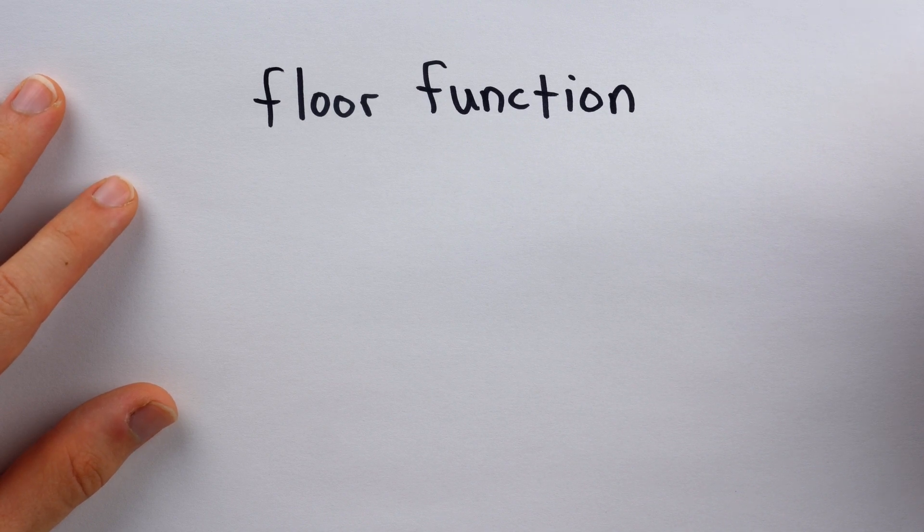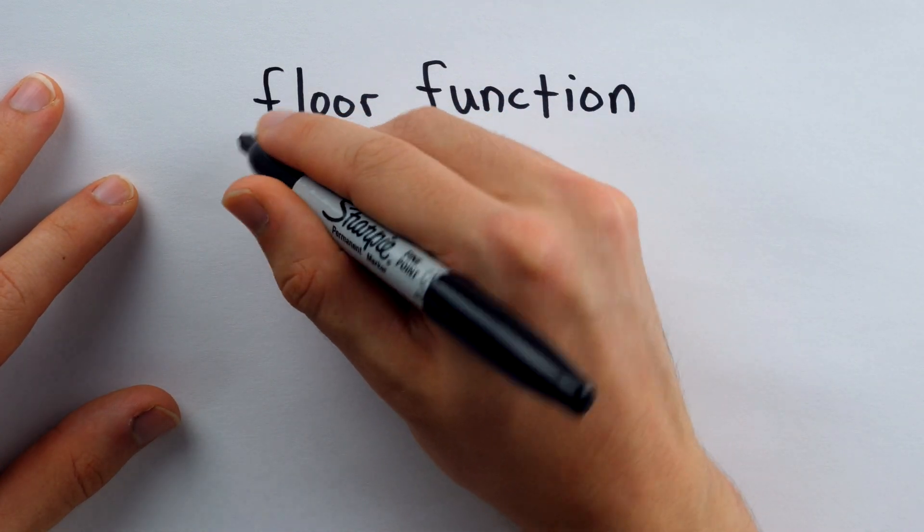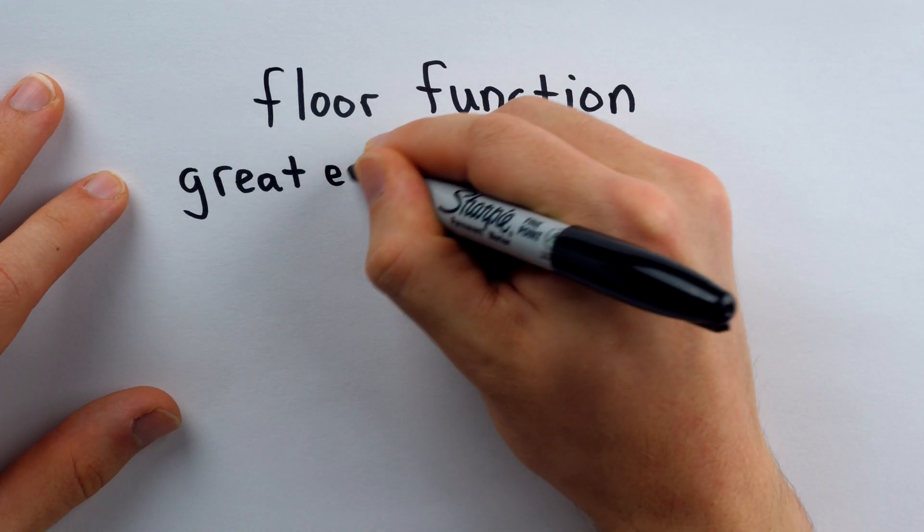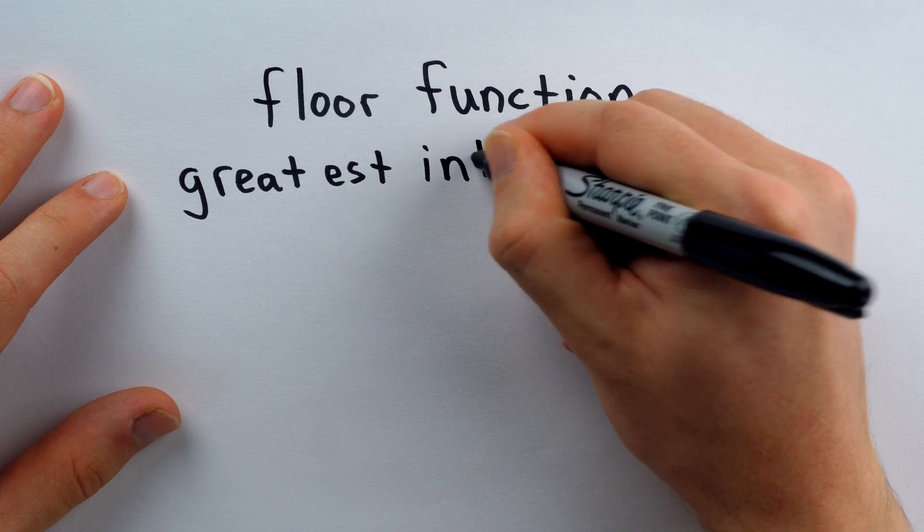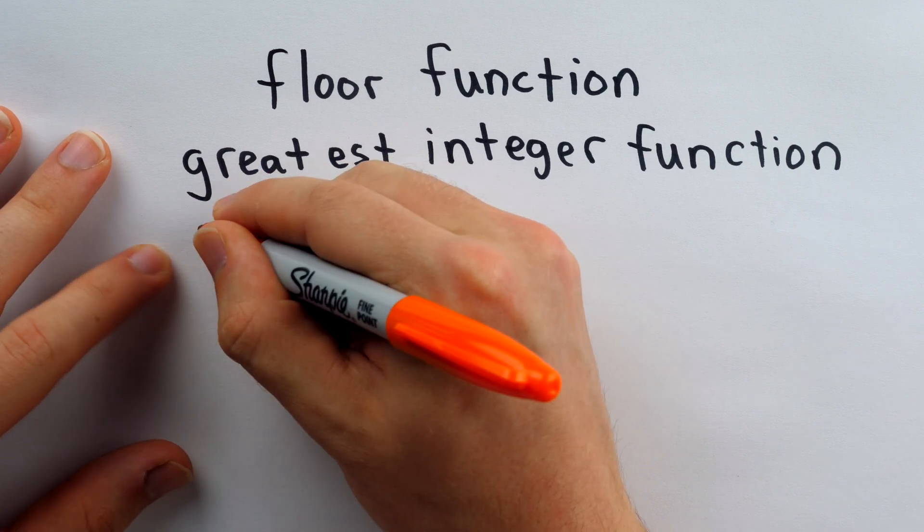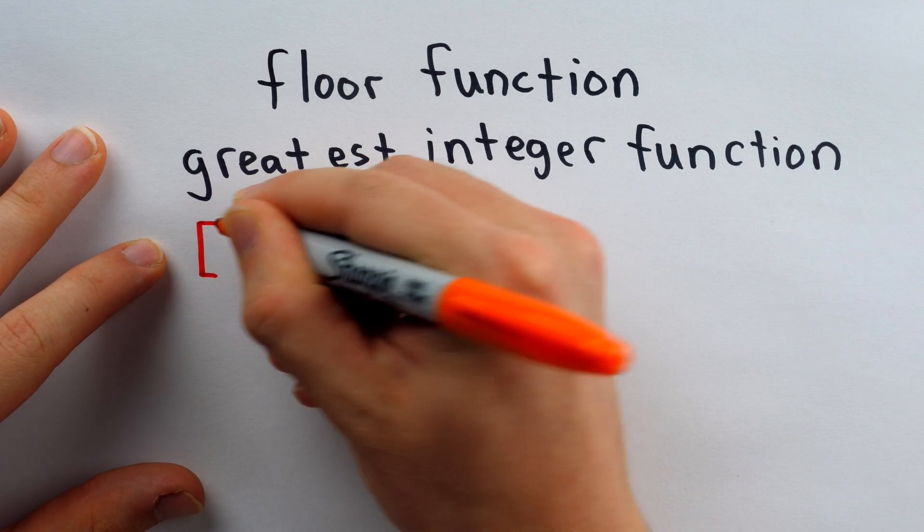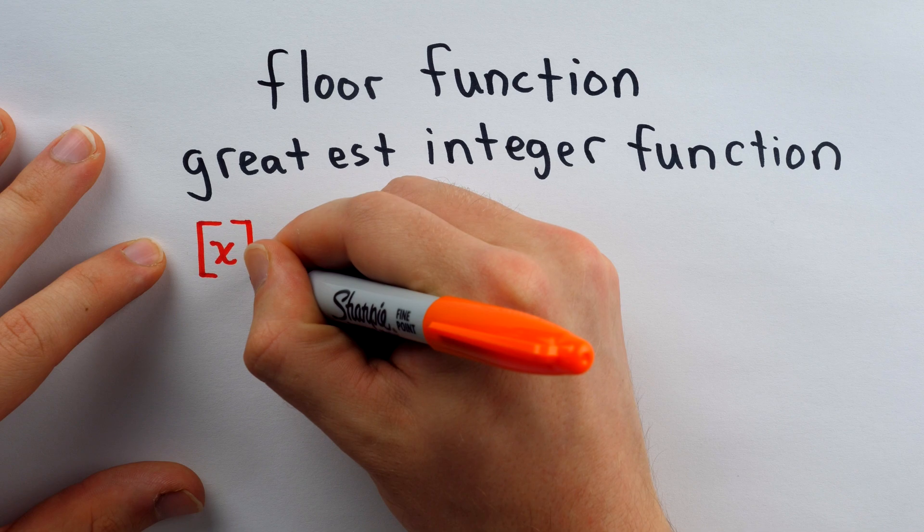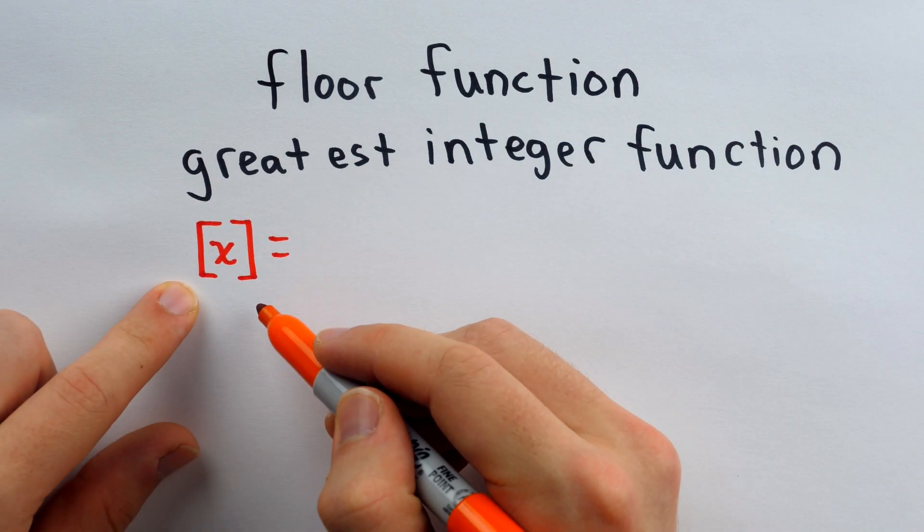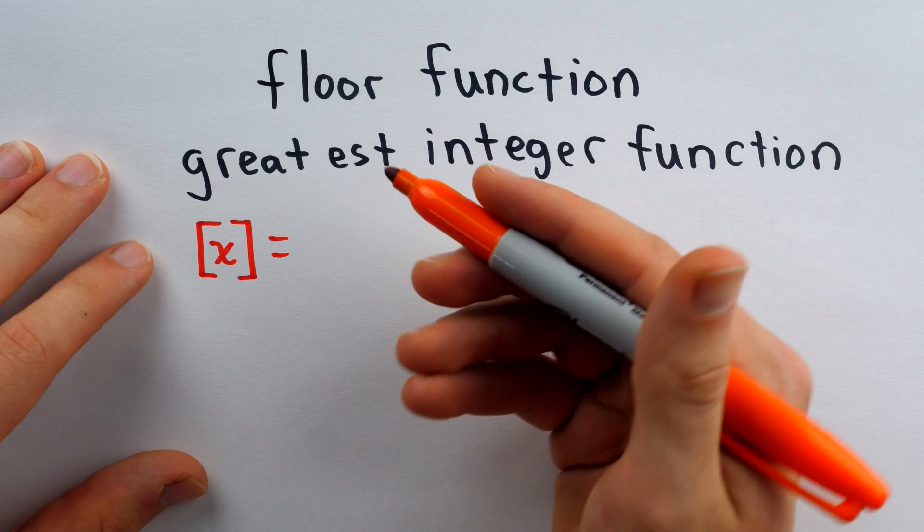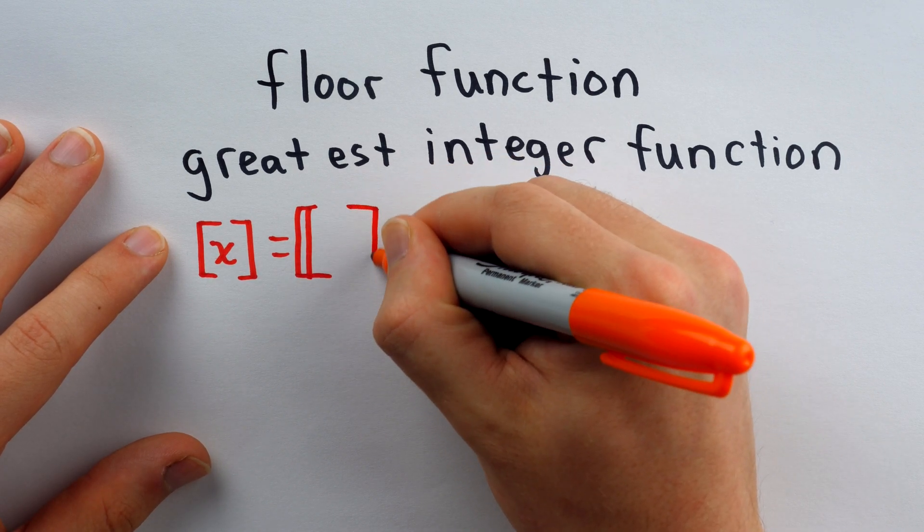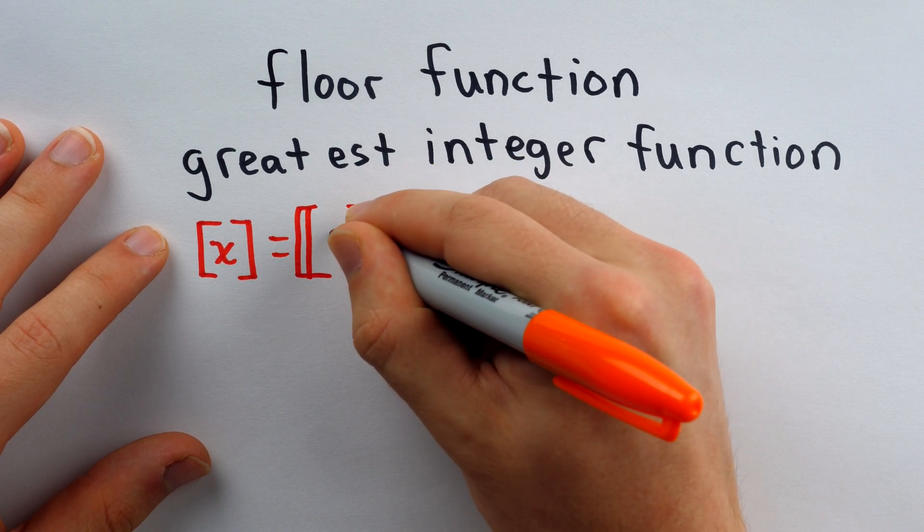The floor function goes by many names and is written with many notations. Another common name for it is the greatest integer function, and both of these names do a great job describing the behavior of this function. For a while, the most standard notation was this sort of bracket notation introduced by legendary mathematician Carl Friedrich Gauss. Another common way you'll see in textbooks today is like a sort of double bracket notation.